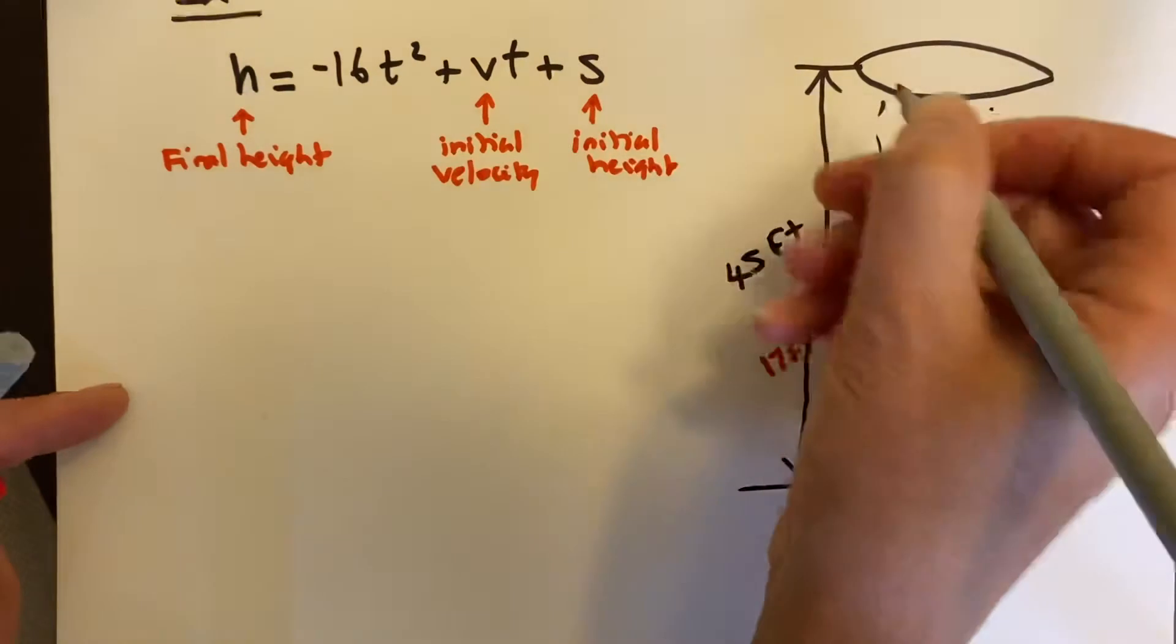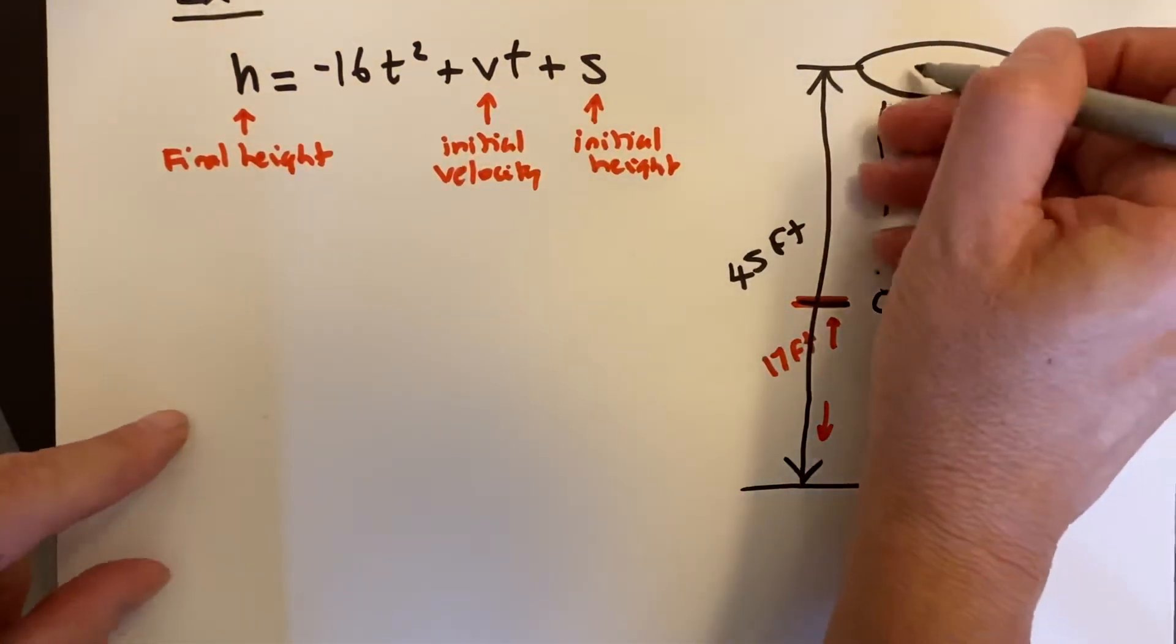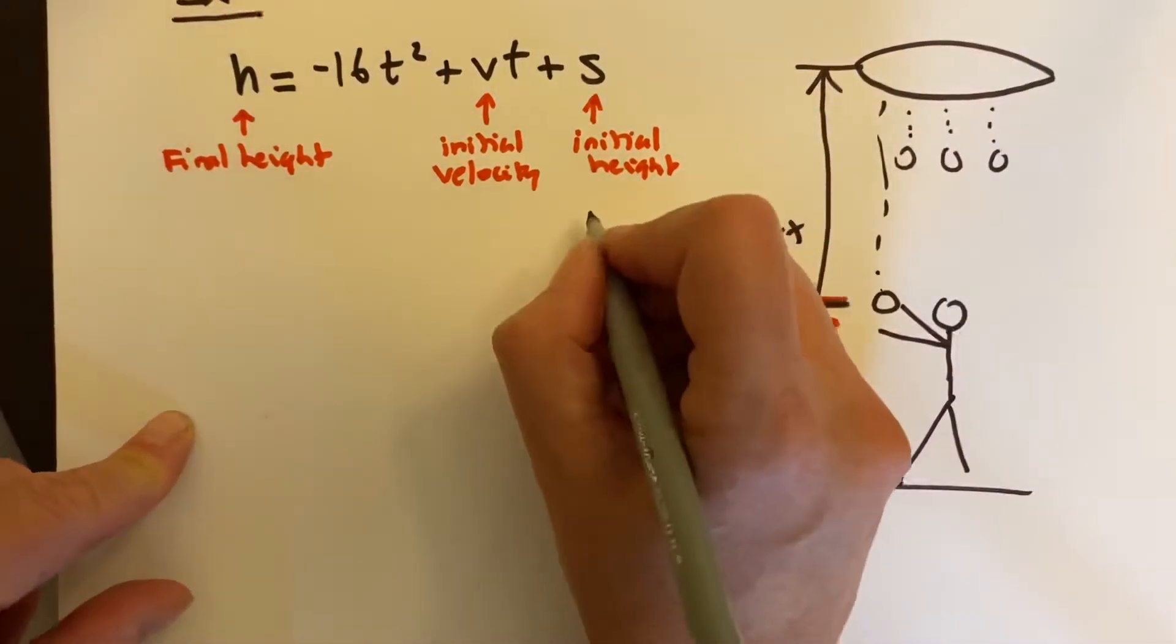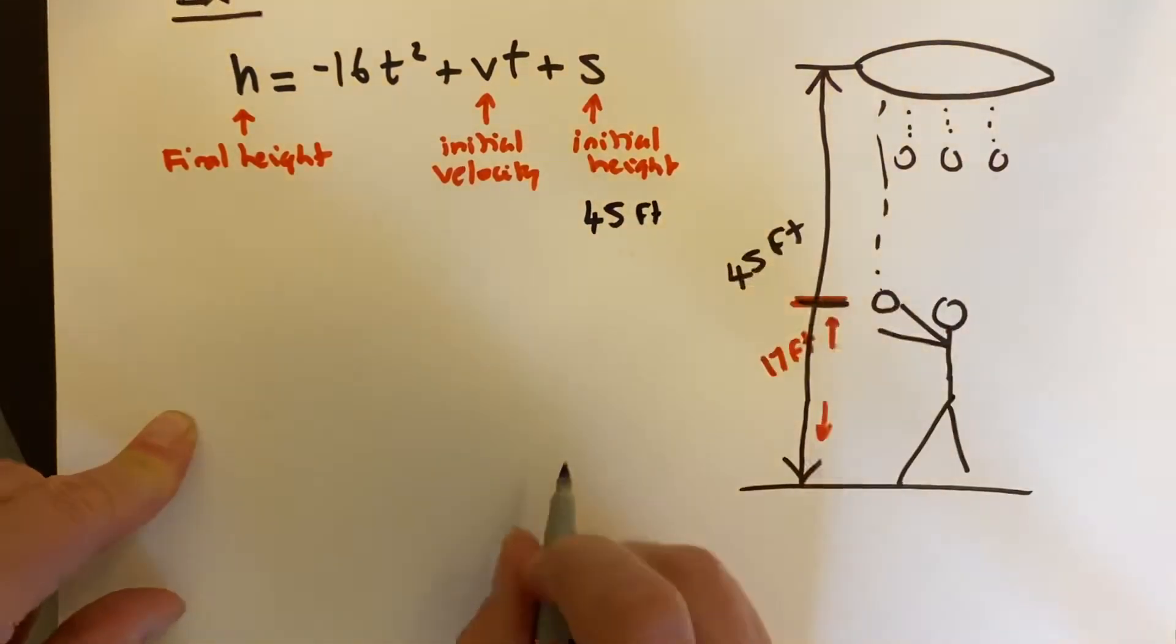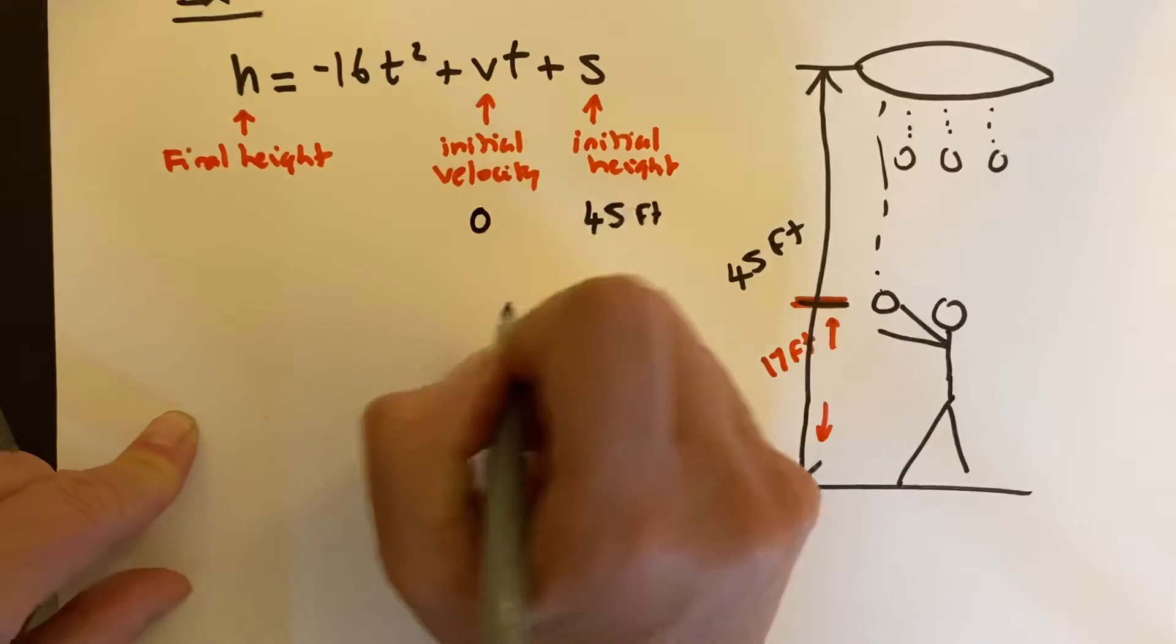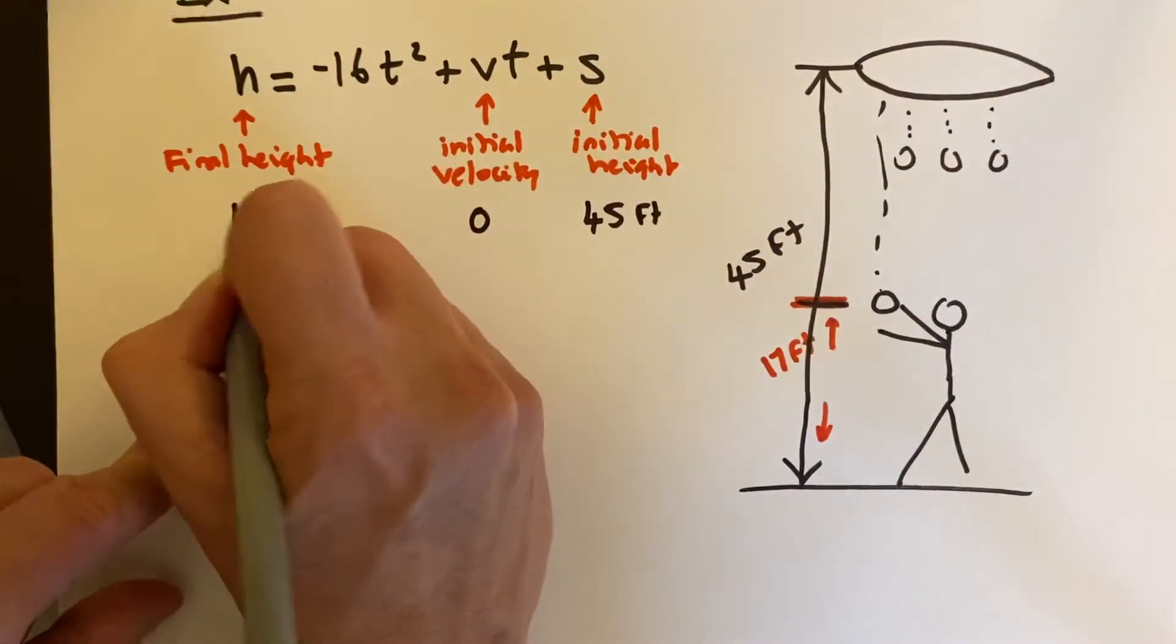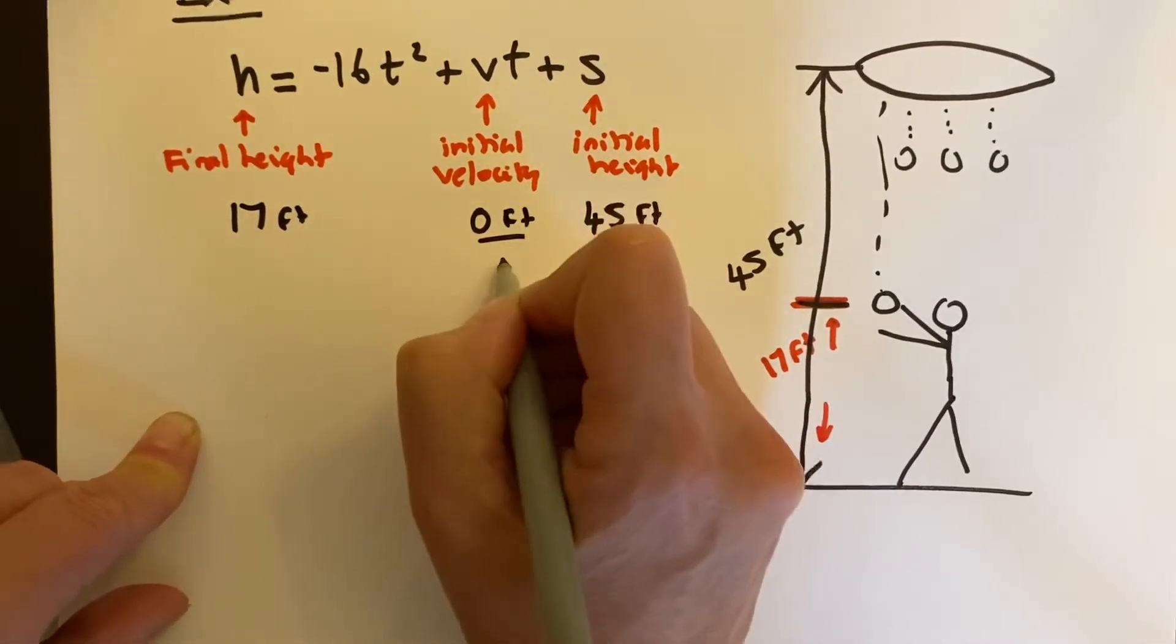Well, we can see that the initial height is 45 feet. The tennis ball started up here. I should have probably put the 45 there, but you get the picture. The initial velocity is zero because they're dropping it, not throwing it. And the final height where the guy catches it is 17 feet. This is zero feet per second.